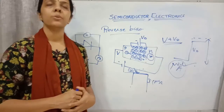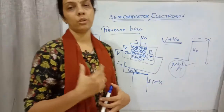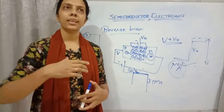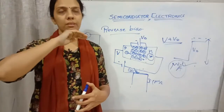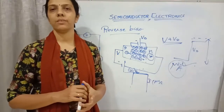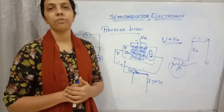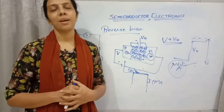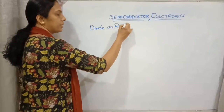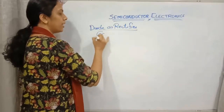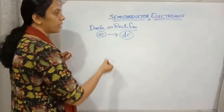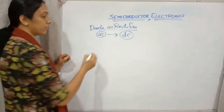Next we study the applications of the PN junction diode. The first application is its use as a rectifier. Alternating current keeps changing direction, so to convert AC to DC we use rectifiers. Rectifiers are circuits that help convert AC to DC, and for constructing a rectifier we require PN junction diodes.